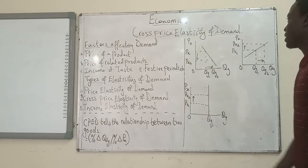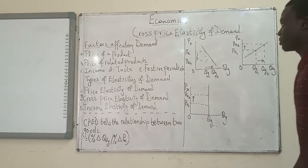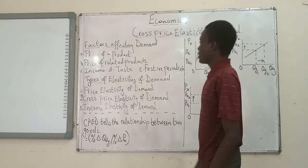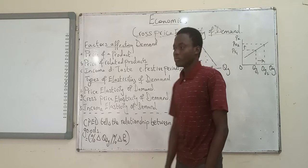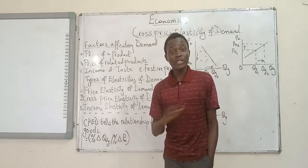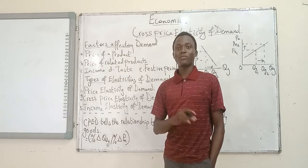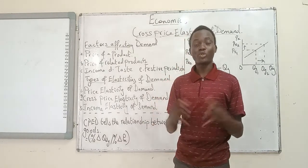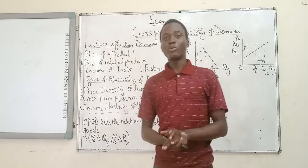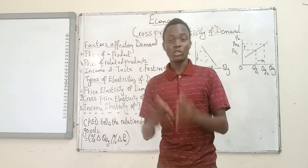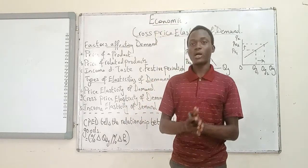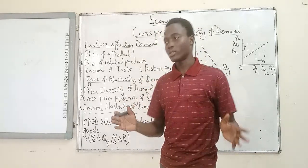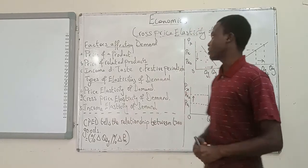Today we are talking about the cross price elasticity of demand. Basically, cross price elasticity of demand is trying to tell you the relationship that exists between two different goods — whether they are substitutes, whether they are complements or not. That is what the CPED is trying to tell you.